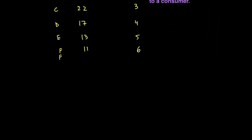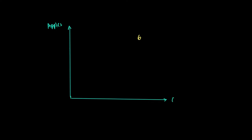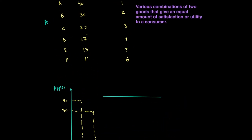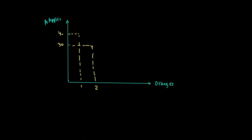With apples on the y-axis and oranges on the x-axis, we can plot the values: 40 and 1, then 30 and 2, then 22 and 3, and so on. Plotting these values gives us the indifference curve. One key feature is that this curve turns out to be downward sloping.